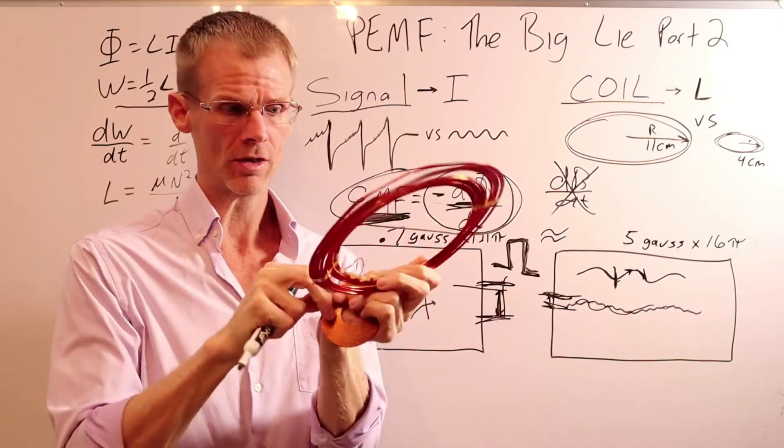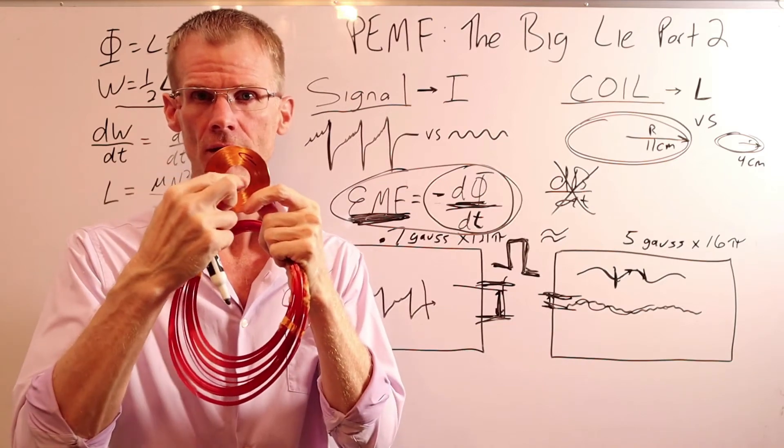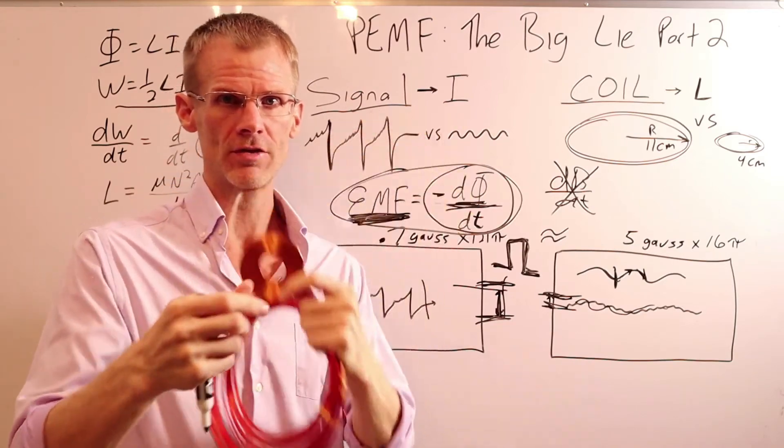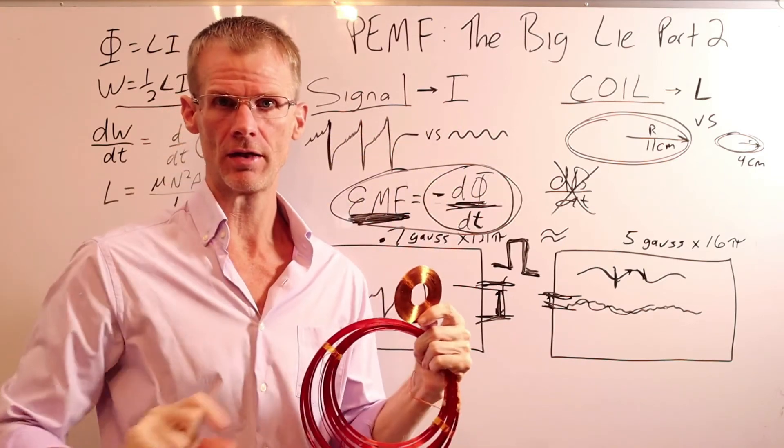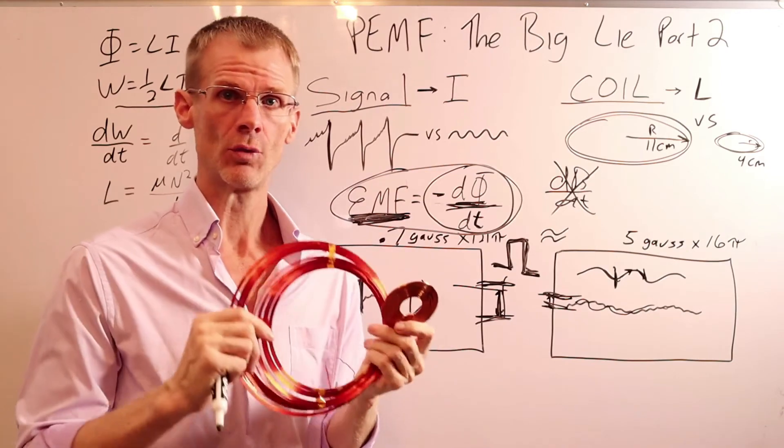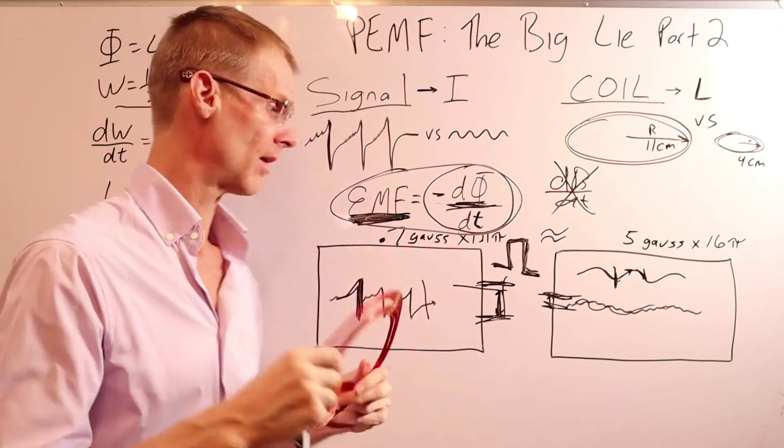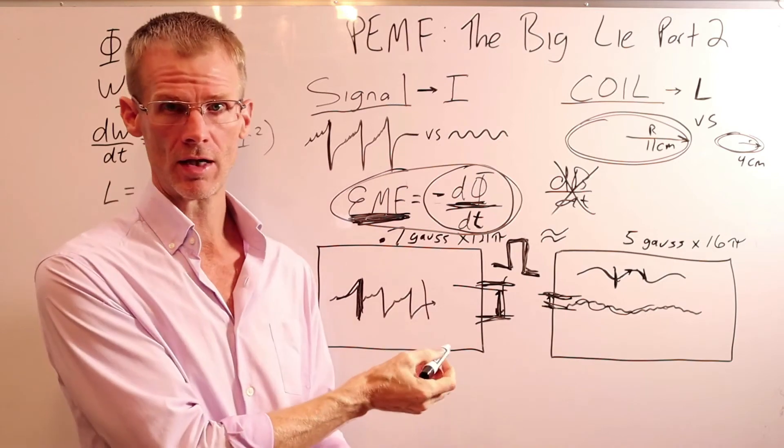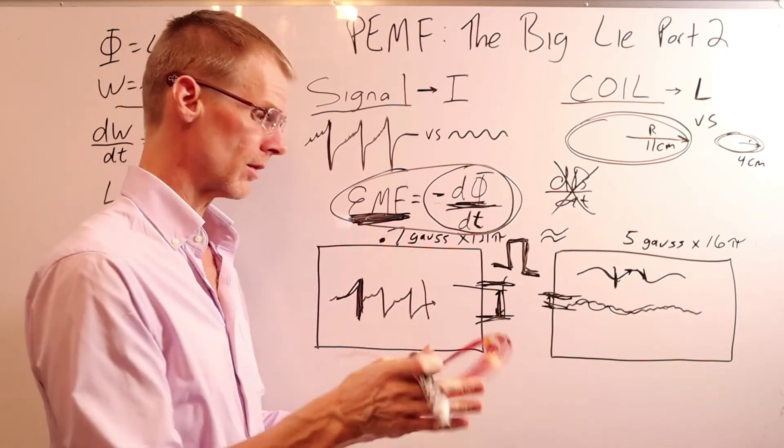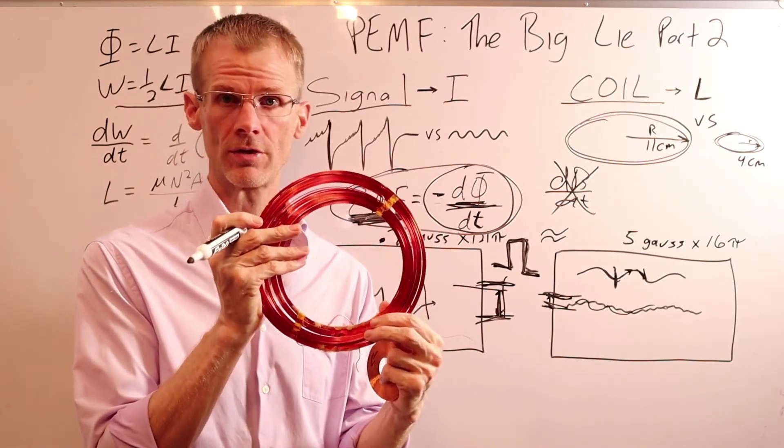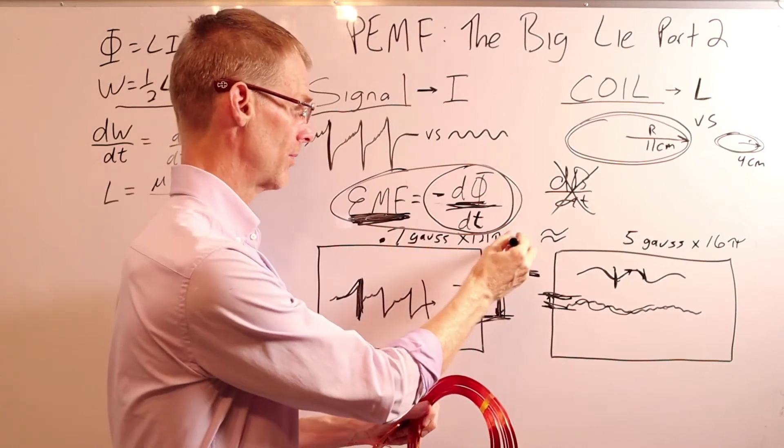So when shopping for a PEMF device, definitely look for one with a good signal like the IMRS or Beamer or QRS. Look for one that has larger current loops and make sure that the signal has a rapid rise and fall. Now, there are other components I've talked about in other videos like pulse pause modulation, changing polarity. Those are all important, too.